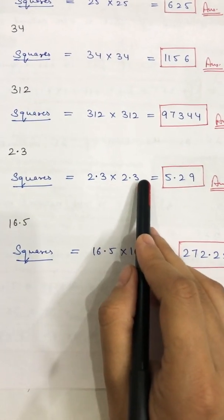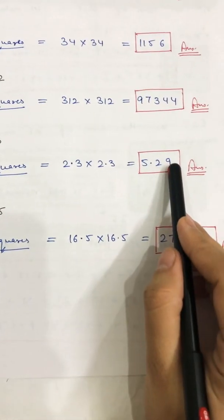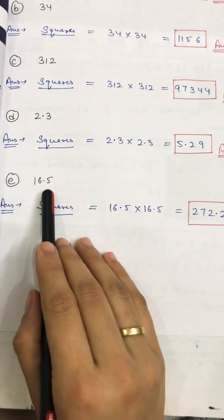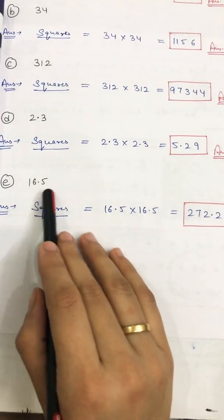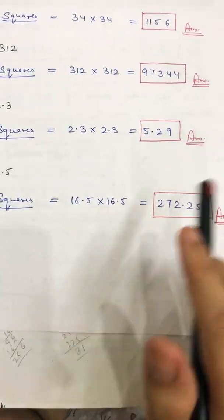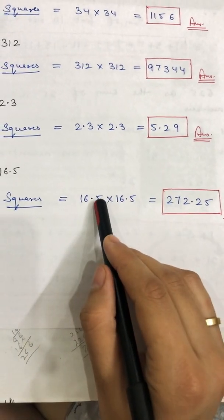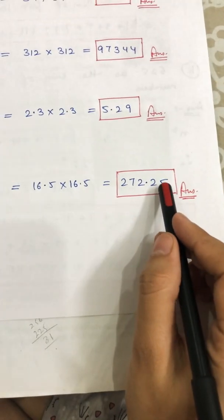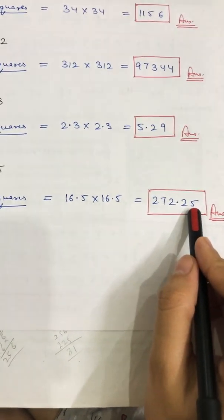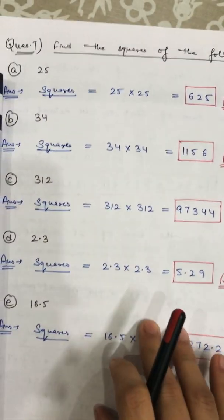For decimal numbers: before two digits (one decimal place in each factor), place the decimal before two digits in the result. So 2.3² = 5.29. For 16.5²: 16.5 × 16.5 = 272.25 — again, before two digits place the decimal.